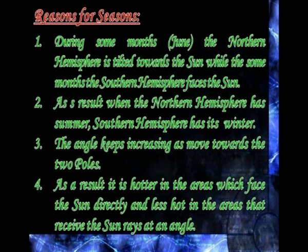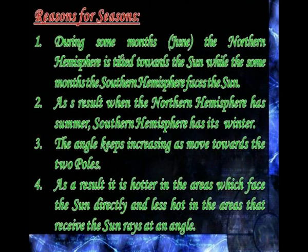Reasons for seasons: During some months, the northern hemisphere is tilted towards the sun, while in other months, the southern hemisphere faces the sun. As a result, when the northern hemisphere has summer, the southern hemisphere has its winter. The angle of sunlight keeps increasing towards the two poles, making it hotter in areas that face the sun directly and less hot in areas that receive sun rays at an angle.